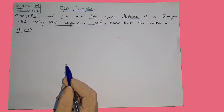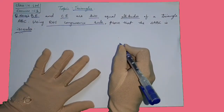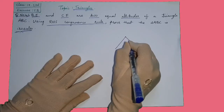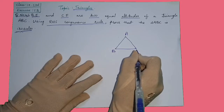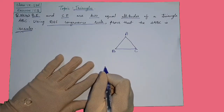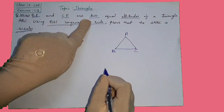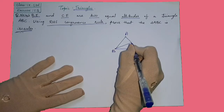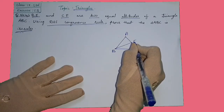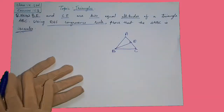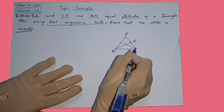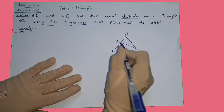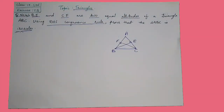There is no figure given, so we will draw one. Let us draw triangle ABC. Now in this triangle, BE and CF are two equal altitudes. Draw altitude BE — altitude means this angle is 90 degrees. Then from C, draw CF to the opposite side, which is also an altitude, so this angle is also 90 degrees. It is given that BE and CF are equal.